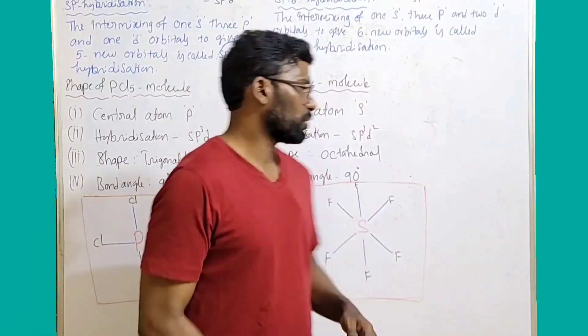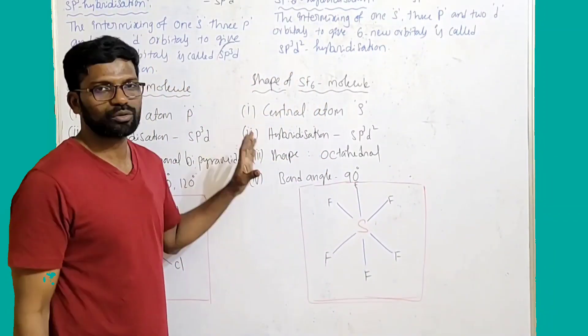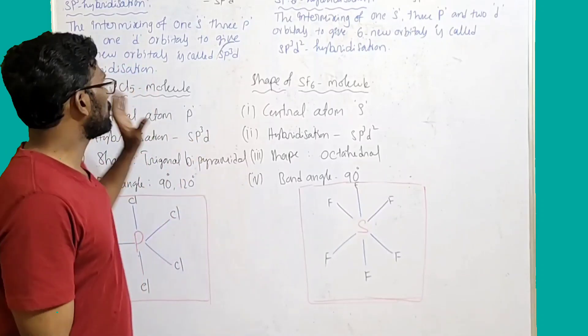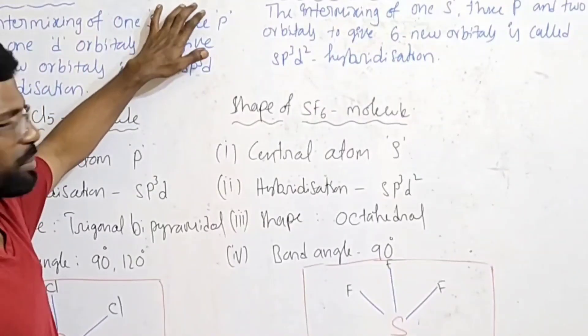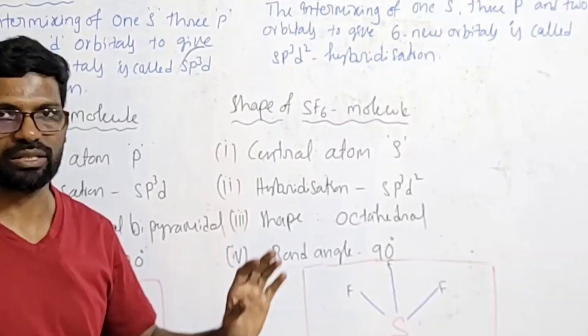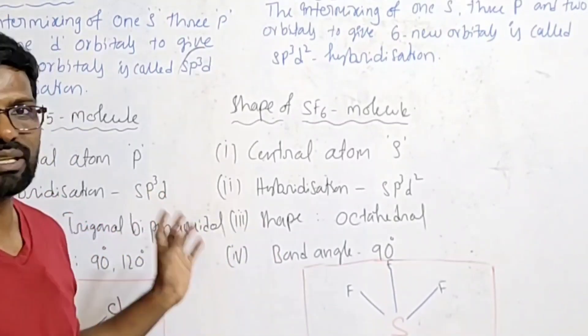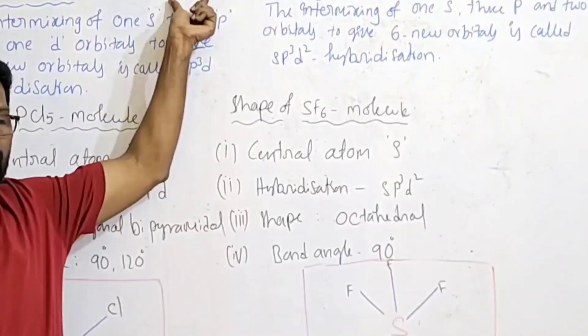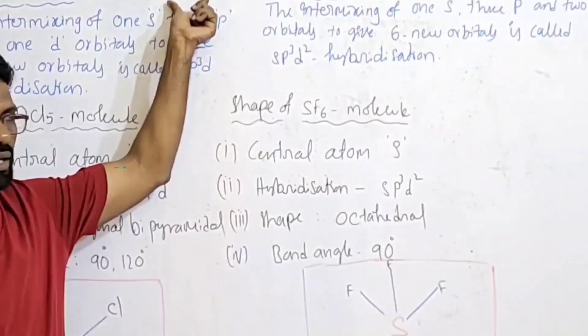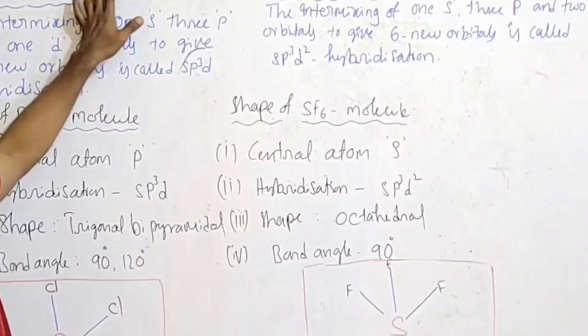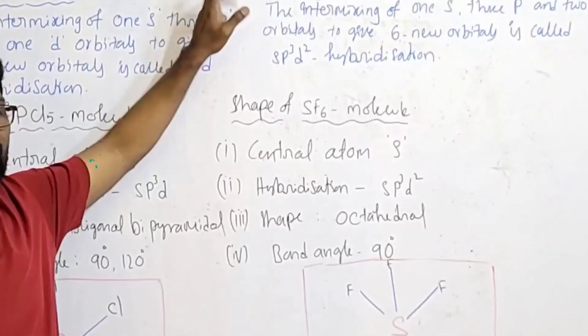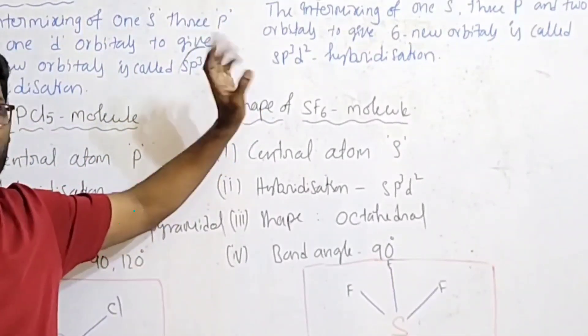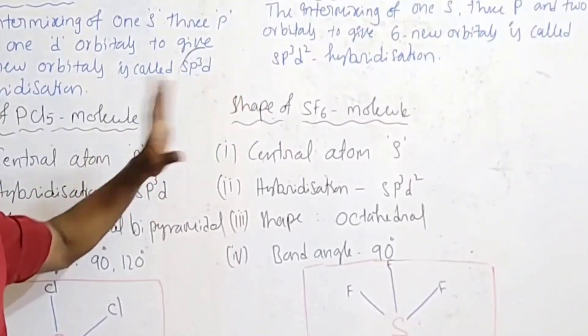Hi dear students, in this video we are going to discuss two most important questions from chemical bonding: sp3d1 hybridization and sp3d2 hybridization. First, explain sp3d1 hybridization with an example, and explain the shape of PCl5 molecule, phosphorus pentachloride molecule. Both questions are the same.